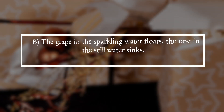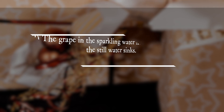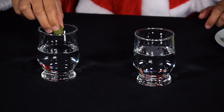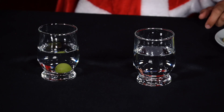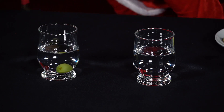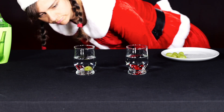It is answer B. The grape in the sparkling water floats, the one in the still water sinks. Grapes essentially consist of water. However, the seeds in the skin are somewhat denser, so that a grape in still water sinks due to its higher density.